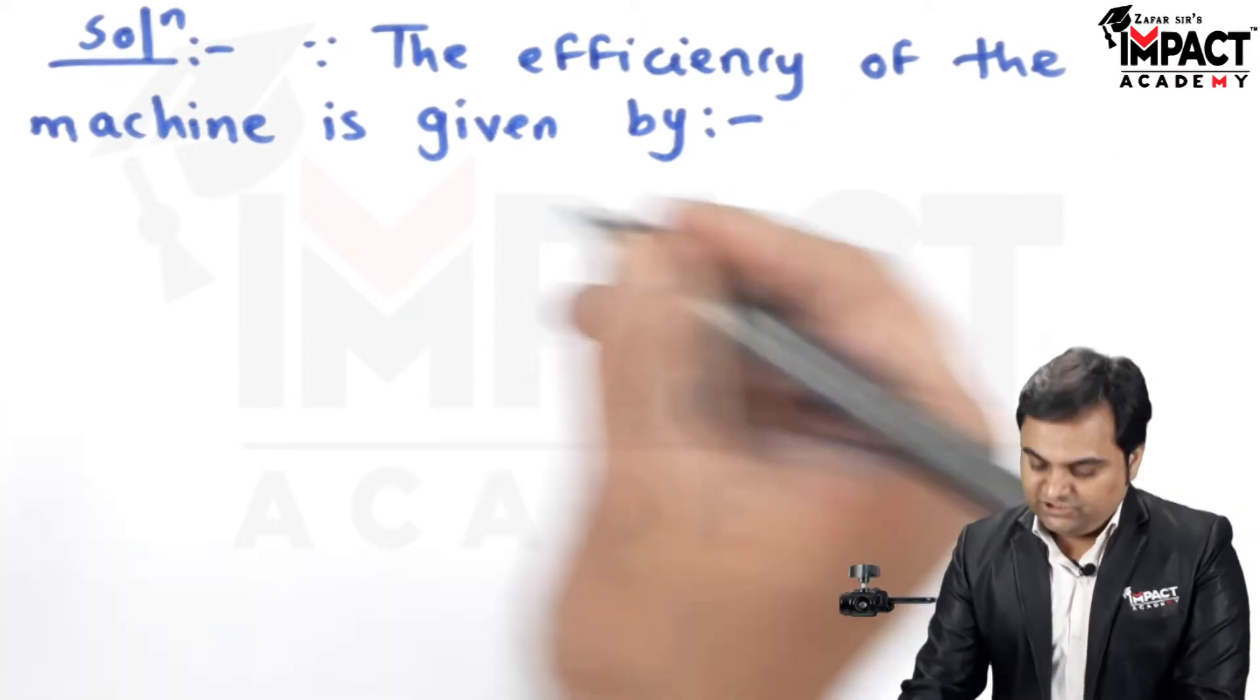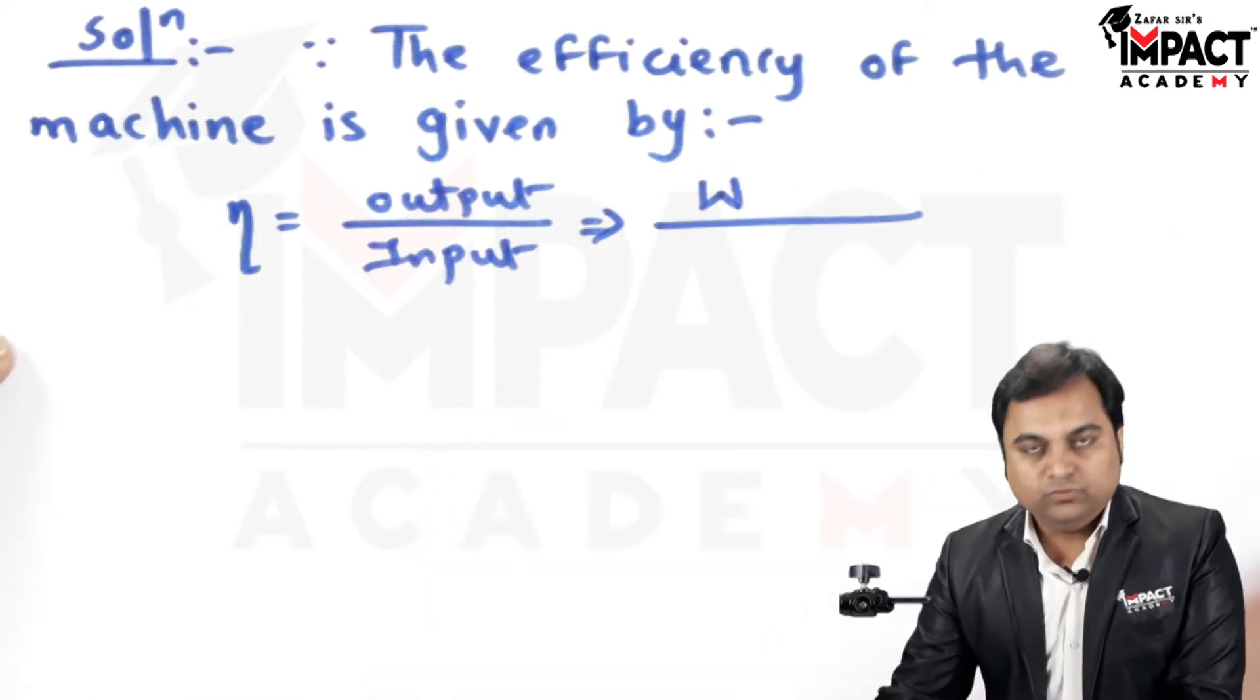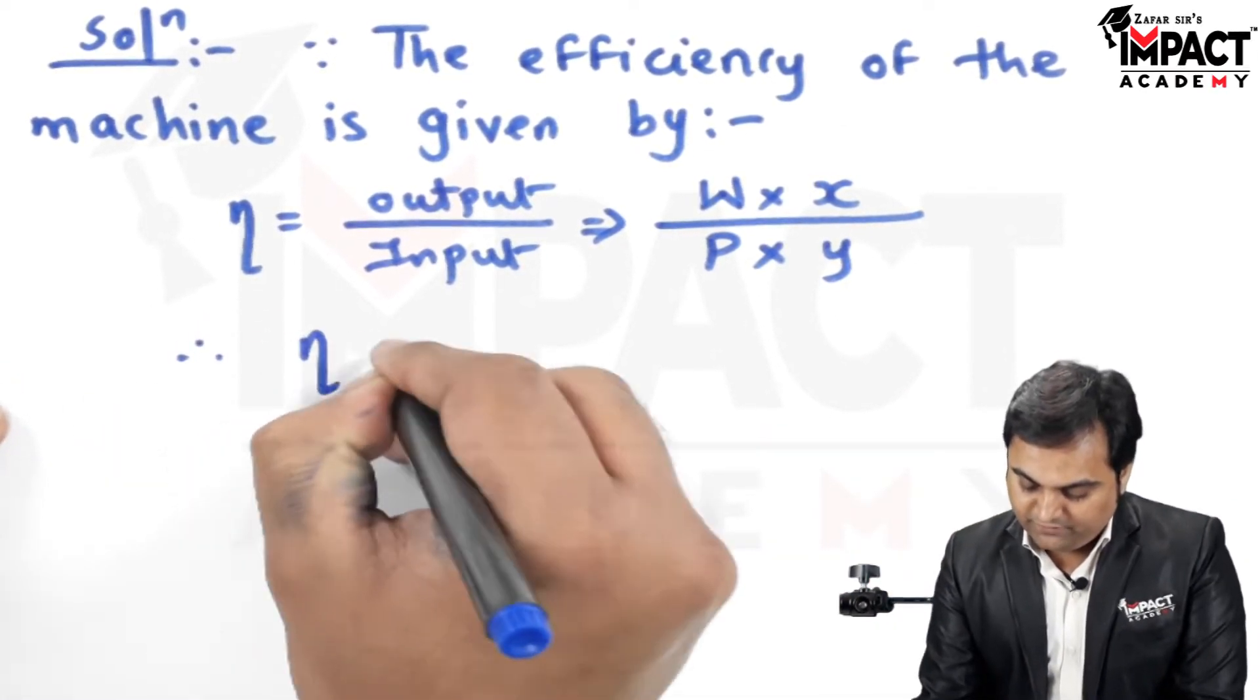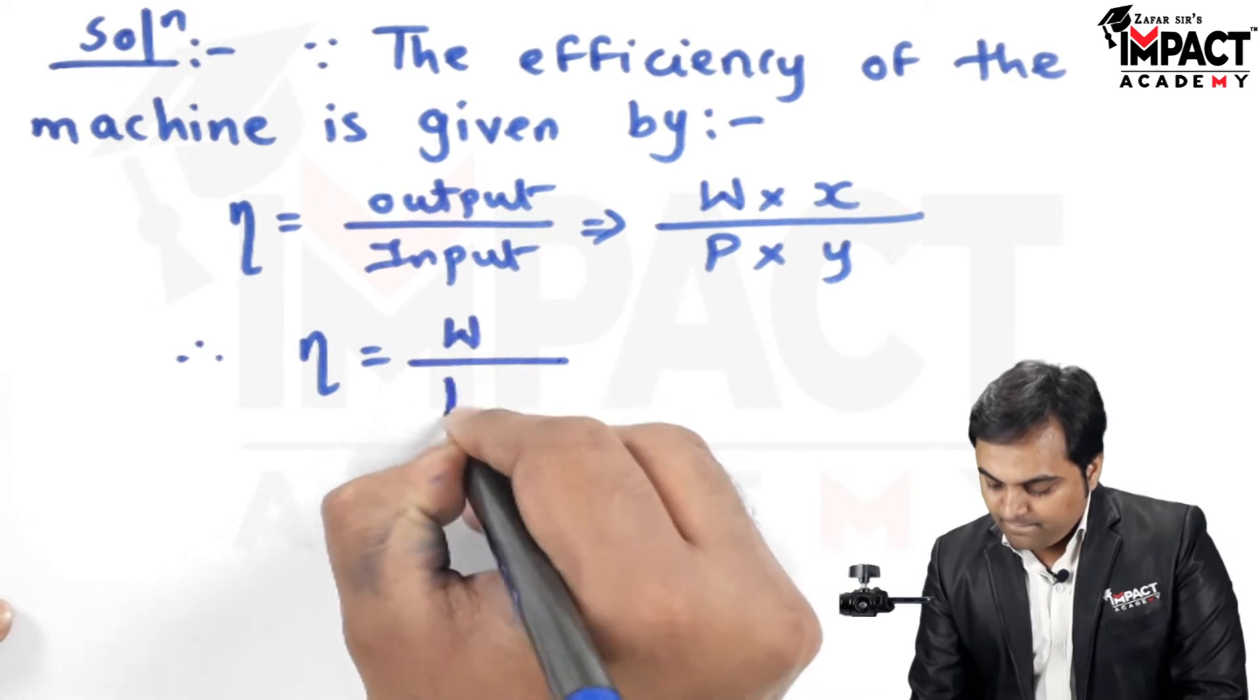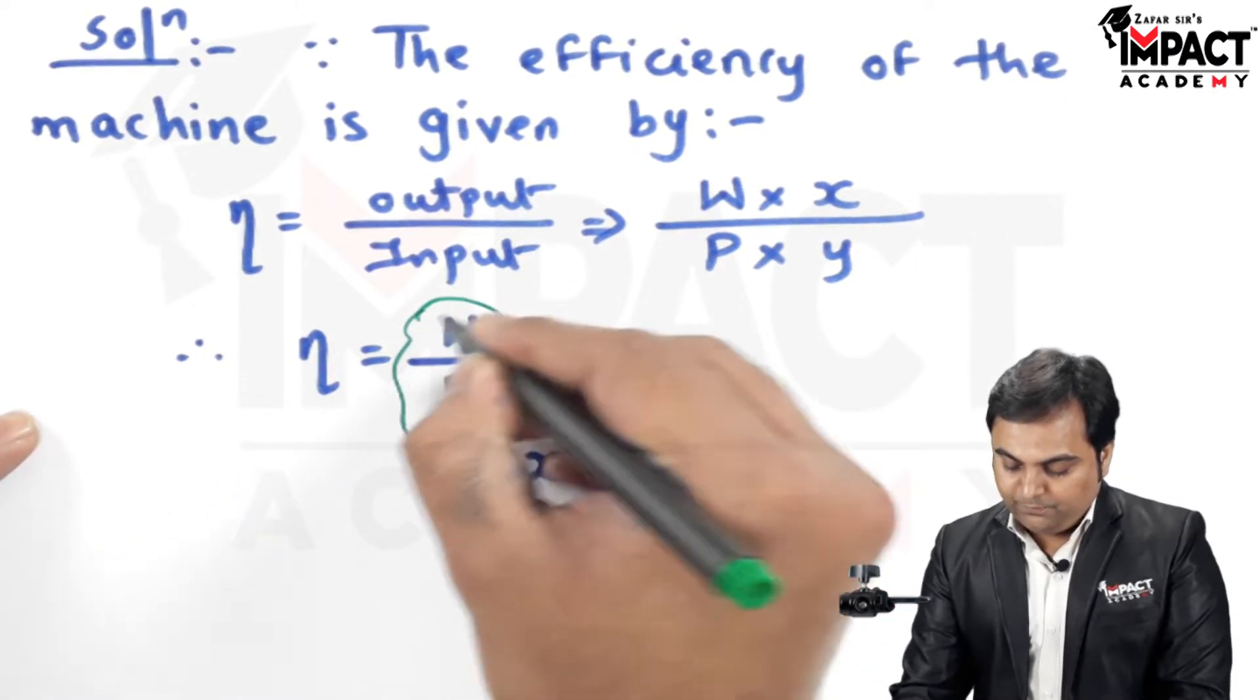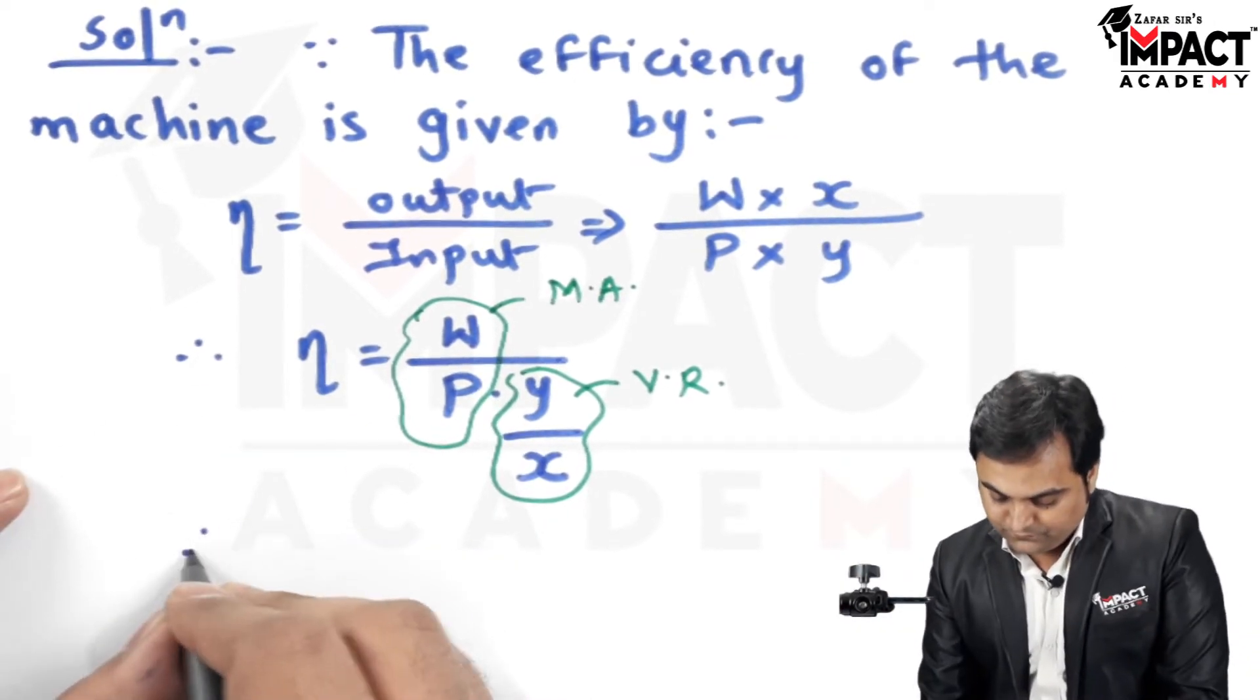The efficiency of the machine is given by output upon input. Output is load into the distance traveled by the load, that is X. Input is effort into distance traveled by effort, that is Y. Therefore efficiency would be W upon P, and here we have Y in the denominator, X would be shifted so it goes into this denominator which is Y by X. Here the term W upon P is called mechanical advantage, whereas Y upon X is called velocity ratio. So therefore I'll write down that efficiency is equal to W upon P into velocity ratio.